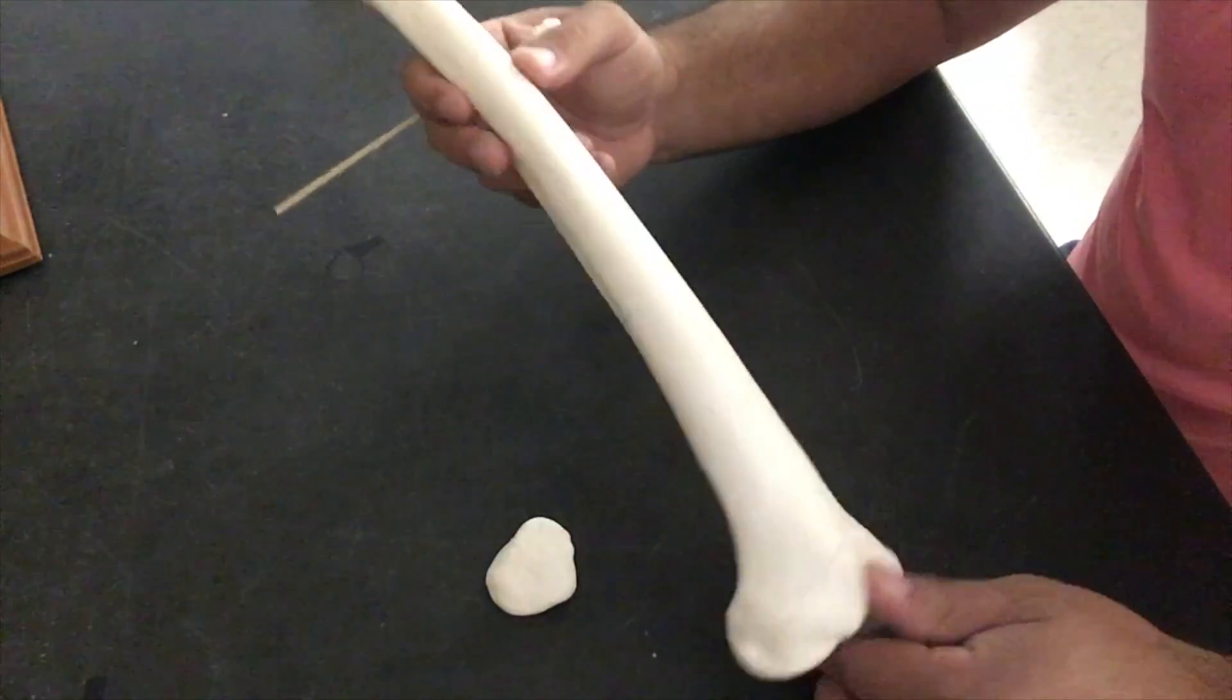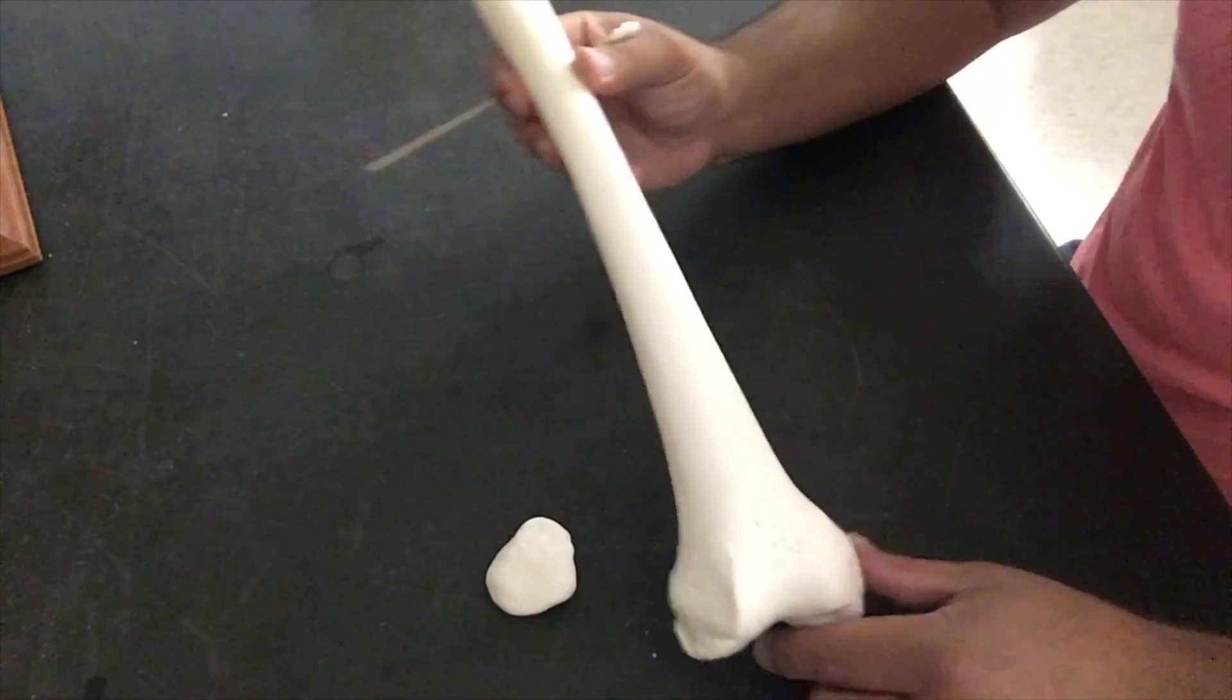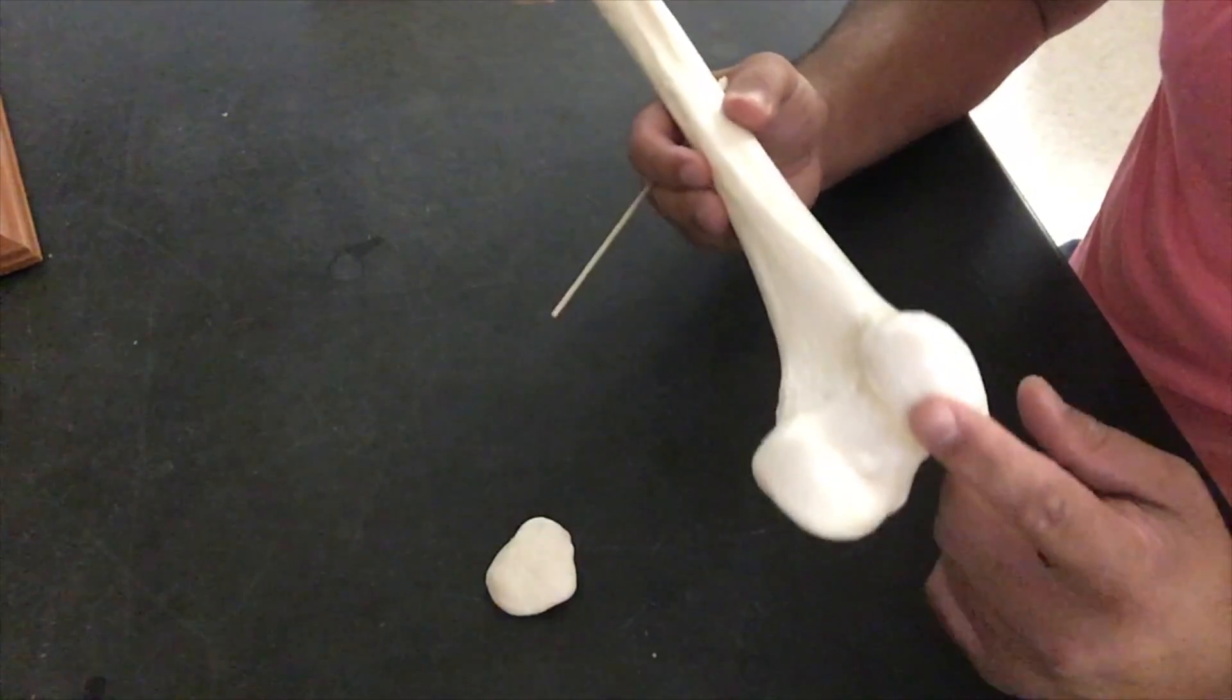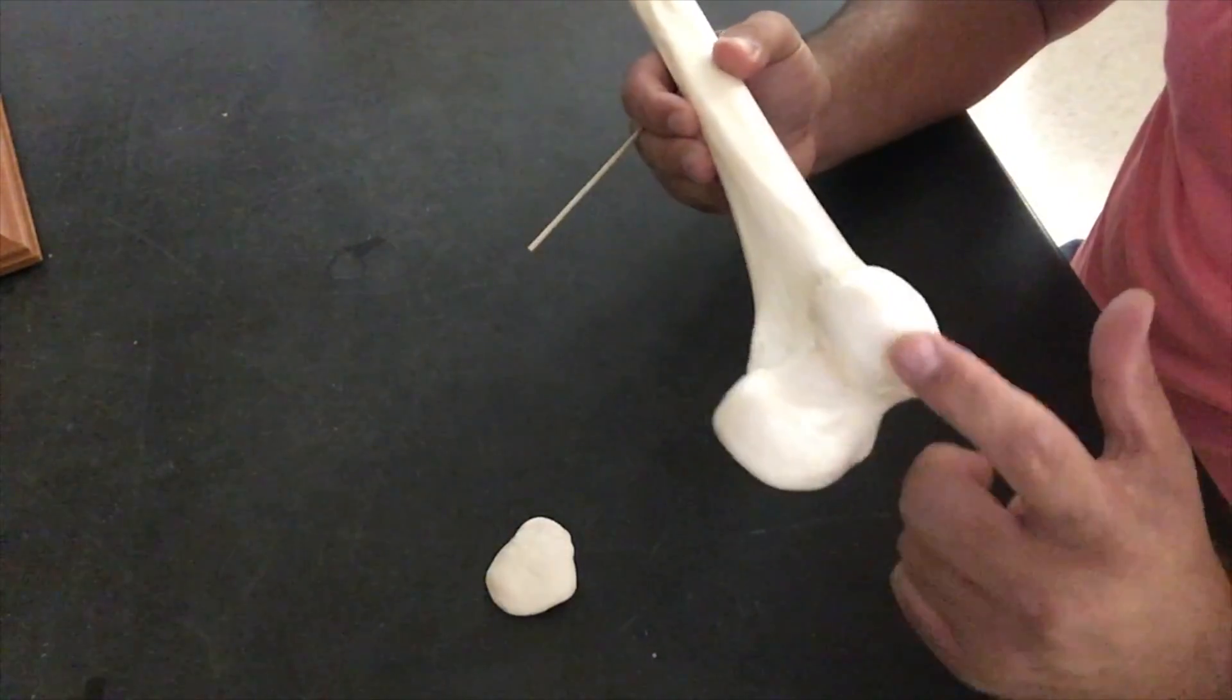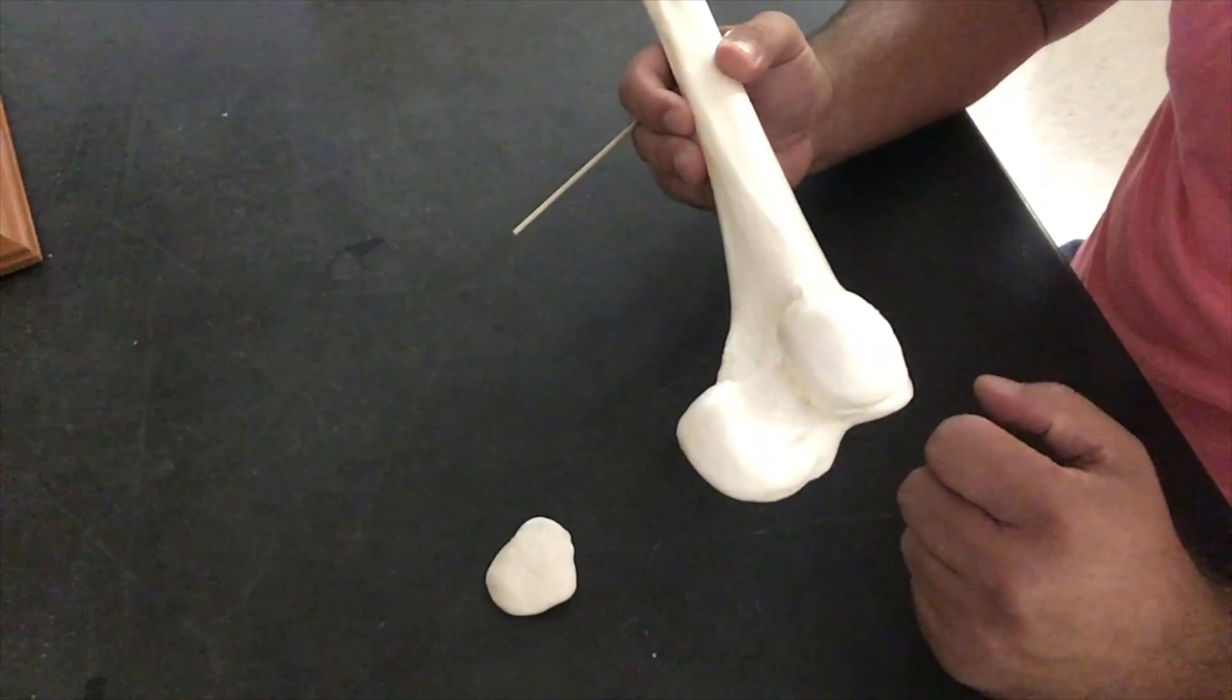We're going to move down to the, if you think to our terminology, our distal most portion of our femur. And we have these big rounded knuckles. So if you think back to our terminology, rounded projections used for articulation are condyles.